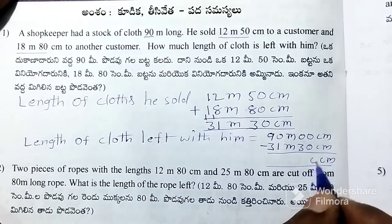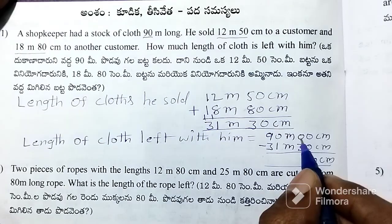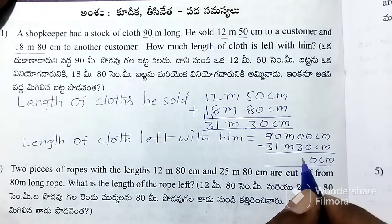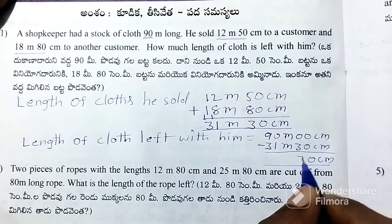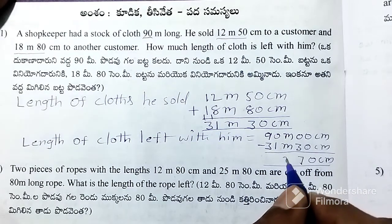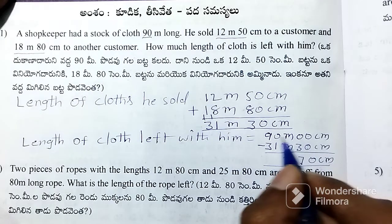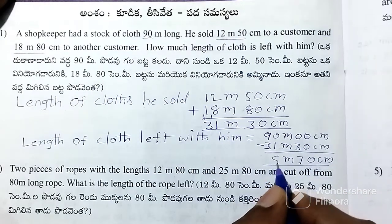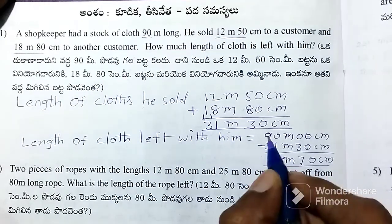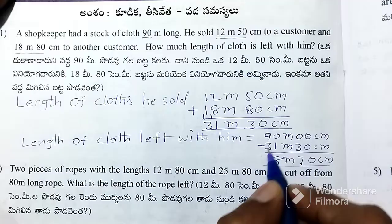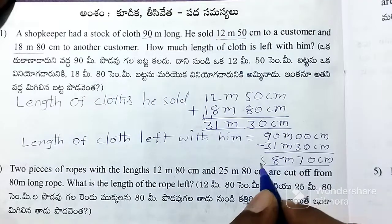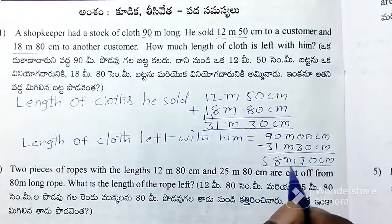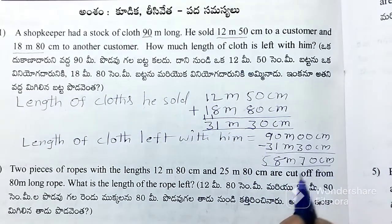0 is less than 10, so borrow: 10 minus 3 is 7. 9 to 1 is better than 8, 8 minus 3 is 5. The answer is 58 meters 70 centimeters.